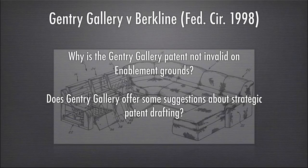Gentry Gallery also offers suggestions about strategic patent drafting — one thing it suggests is to make sure that you disclose more broadly and more vaguely. The issue was not so much the lack of disclosure as much as the very clear language the patentee used about where the controls could be. If the disclosure had merely described placement as an example rather than the only place for the controls, the case might have turned out differently.